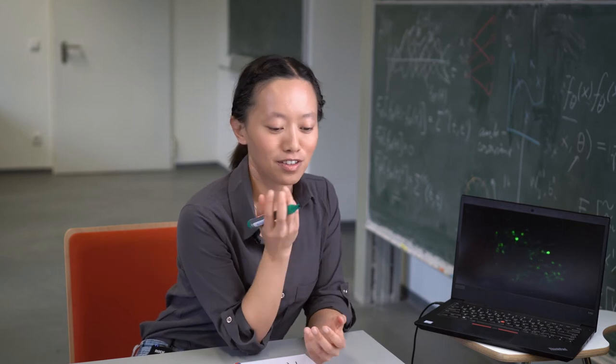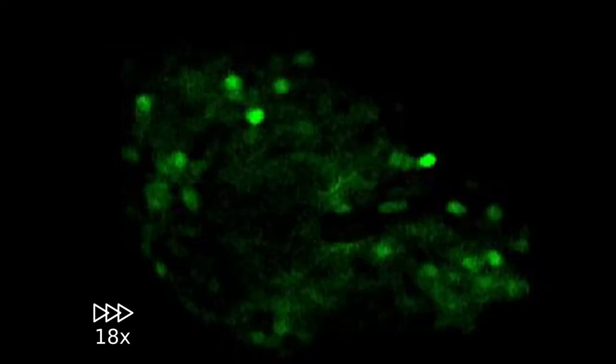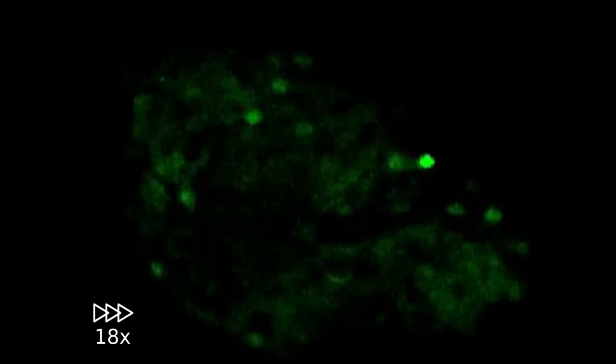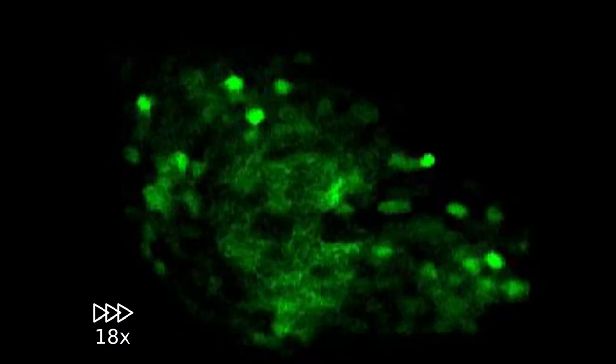Here you are seeing an example of the calcium imaging of a fruit fly brain region responsible for olfaction, the smell perception. Each of the circular patches here is a cell body of a neuron. When the neuron is active, the calcium ion concentration increases and the neuron glows.